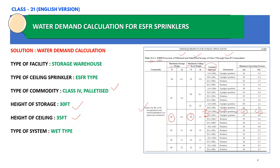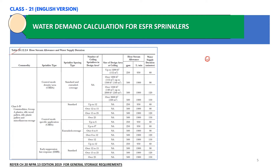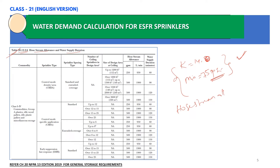Now we move to the next slide to calculate the water demand requirements. On screen is Table 20.12.2.6 — Hose Stream Allowance and Water Supply Duration. From the previous slide we identified K factor 14.8 and minimum operating pressure of 75 PSI. Here we consider hose stream allowance and water supply duration. Our case is Class 4, so this table applies. We are not considering CMSA or CMDA — we are considering ESFR sprinklers. The design area of sprinklers selected is 12.